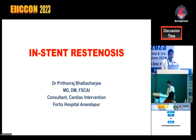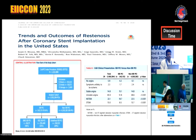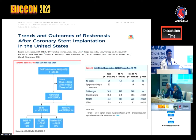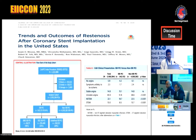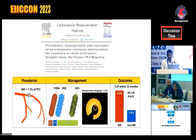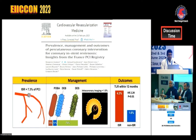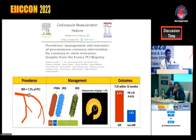Thank you, respected chairpersons, my dear colleagues. Regarding in-stent restenosis incidence, looking at a US study, it accounts for approximately 10% of total PCI over the last eight years. From a French study in Europe, ISR-PCI accounts for approximately 7% of total PCI numbers. PCI remains the preferred treatment modality, and outcomes of ISR-PCI in terms of target lesion revascularization are worse than non-ISR PCIs.